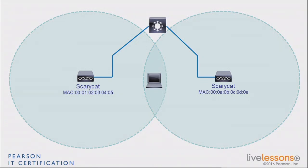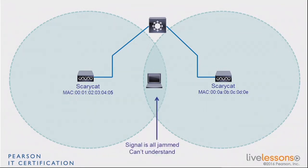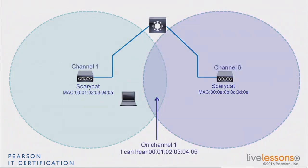If you are in the middle between two access points and they are on the same channel, there is going to be a problem — you will hear messages from both access points on the same channel, making it unclear what each sent. For that reason, every time you have two access points next to each other serving the same area, they should never be on the same channel. If one access point on the left is on channel one, the access point on the right — if there is overlap — has to be on another channel, like six or eleven. Stations in the middle will hear channel one clearly from the first access point and need clarity from the other.